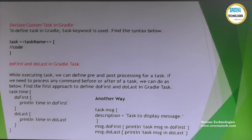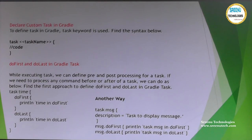First we will learn the syntax for writing tasks, then we can go the practical way. Whenever we need to write a task, we use the task keyword, then we specify the task name. Inside the task block, whatever unit of work you want to perform, you can do. Tasks also have lifecycle methods that will execute depending on the stages.